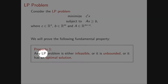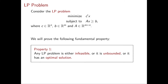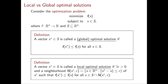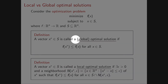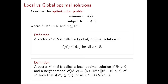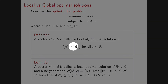We will see that a linear programming problem can only have those three specific outcomes — any linear programming problem is either infeasible, unbounded, or it has an optimal solution; nothing else can happen. The second property regards the difference between global and local optimal solutions. We say that x* is a global optimal solution if the cost of x* is less than or equal to the cost of x for any other feasible x.